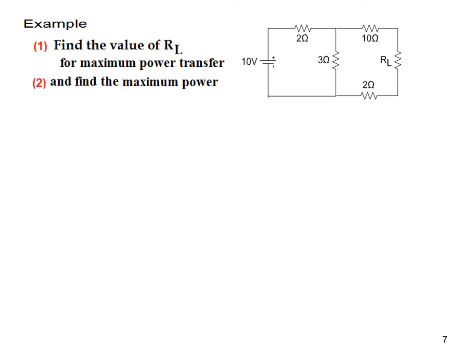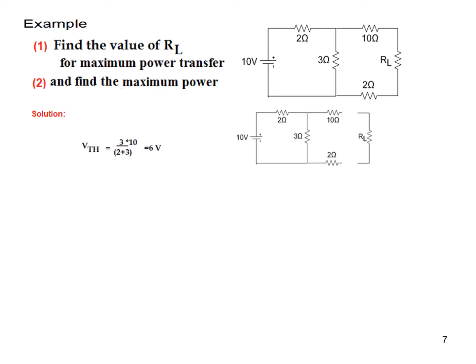Now let's do an example. Given a circuit, we need to find the value of R_L for maximum power transfer and the value of maximum power transferred. Following Thevenin's theorem, we first remove the load and find the Thevenin voltage and resistance at those terminals. V_Thevenin equals the voltage across the 3-ohm resistor since no current flows in the open branch. Using the voltage divider rule: 10V × 3 / (2 + 3) gives V_Thevenin = 6 volts.